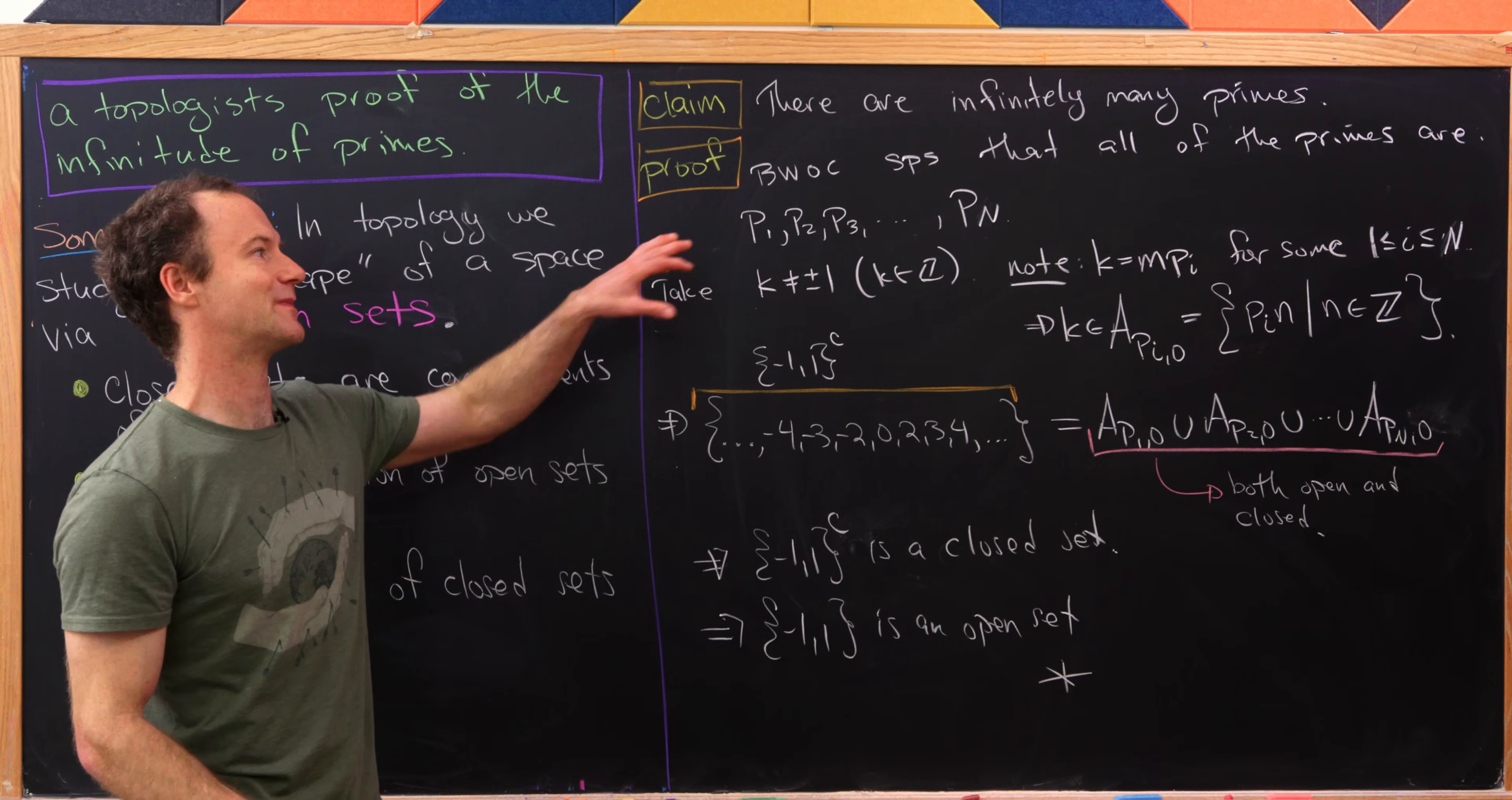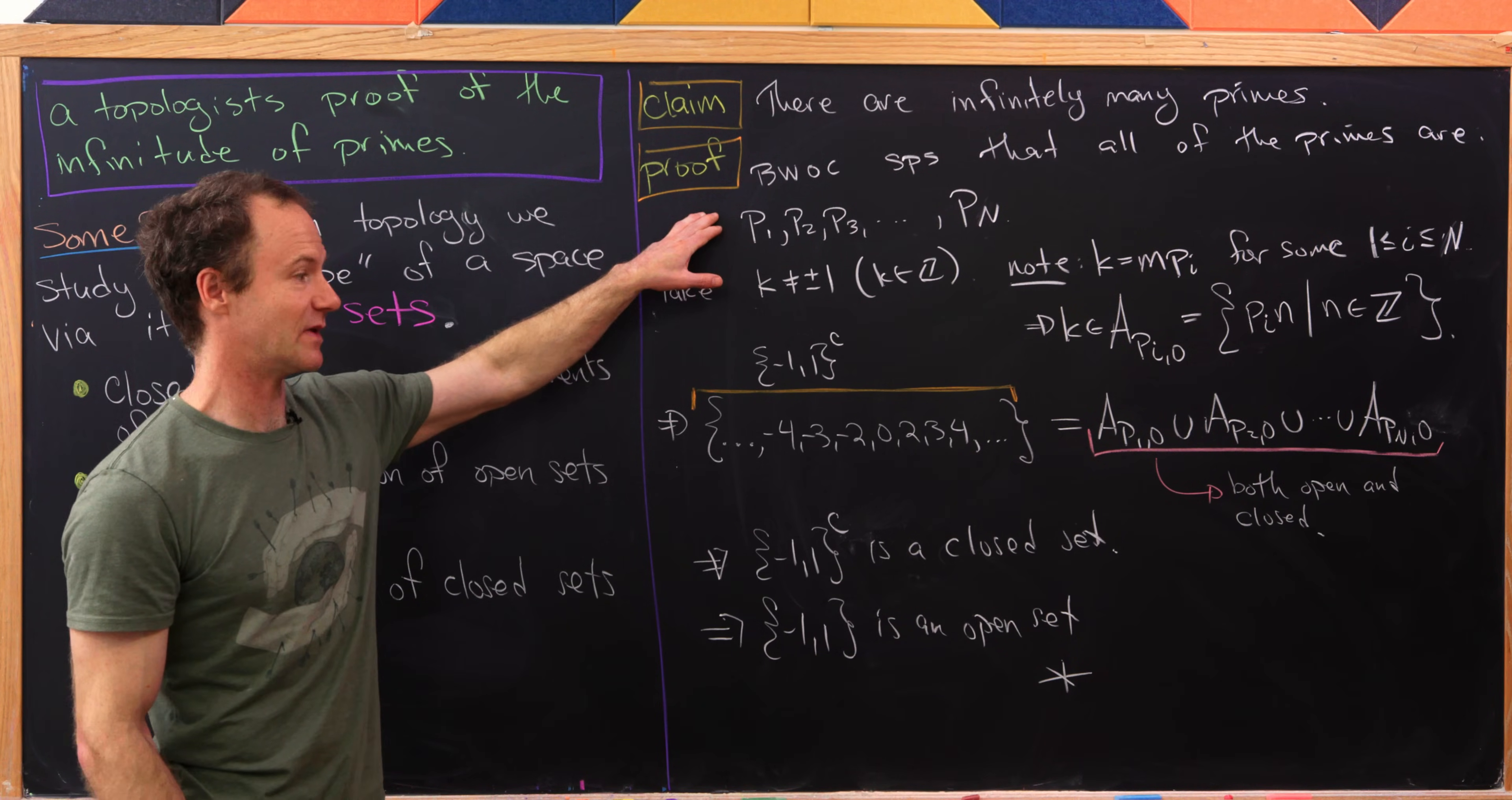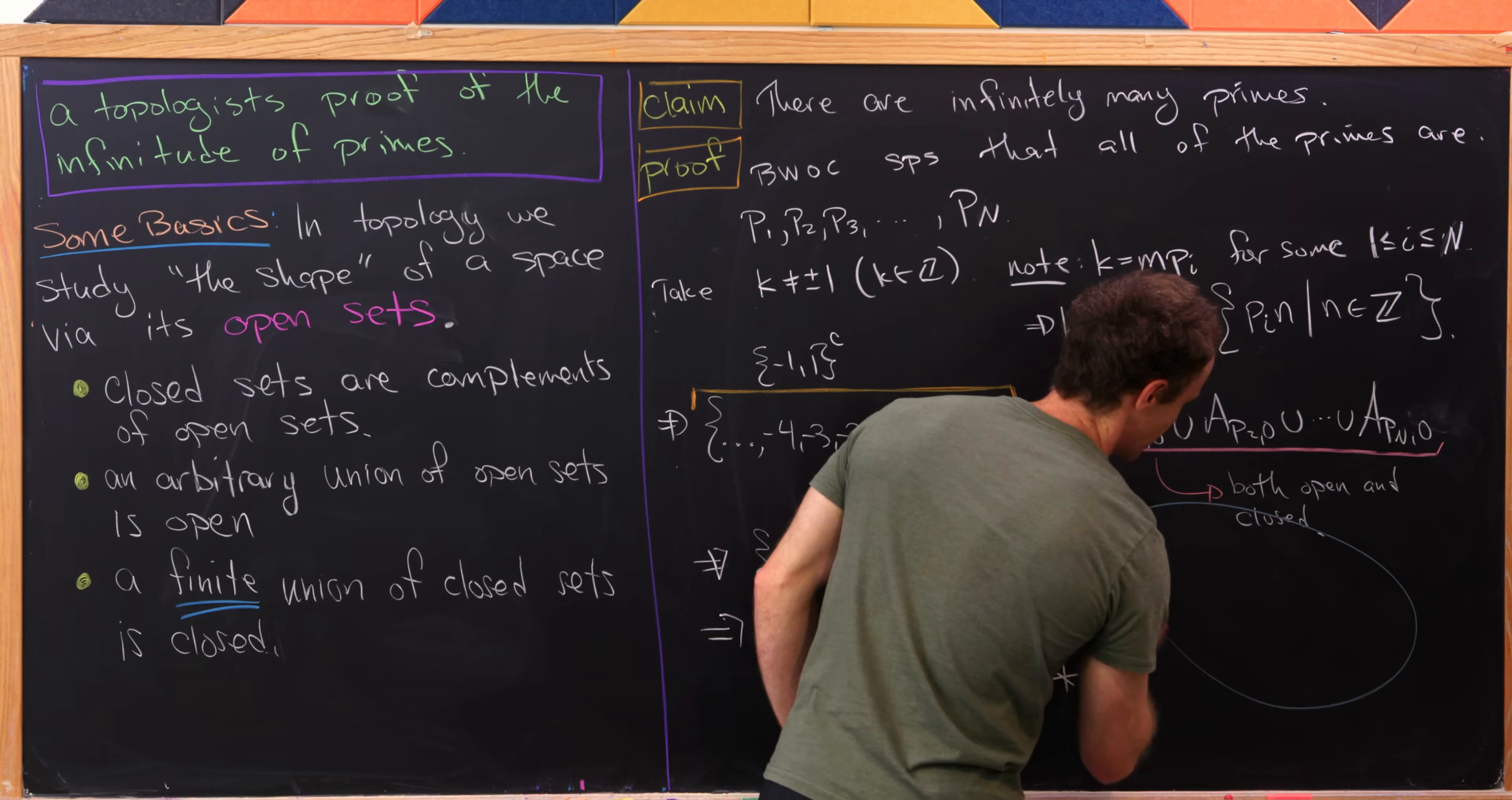And what did we contradict? Well, it must be the assumption up here that we have finitely many primes. And now let's look at where it really went wrong. And that would be right here.